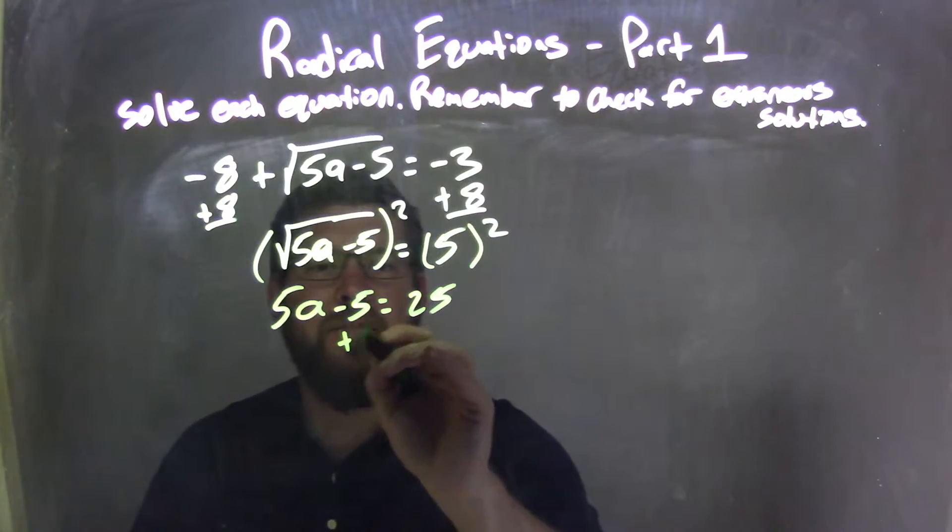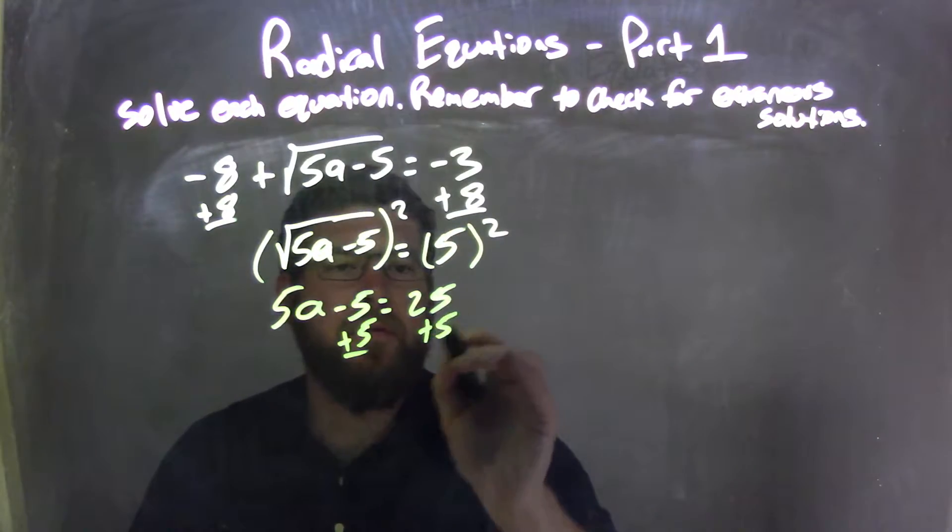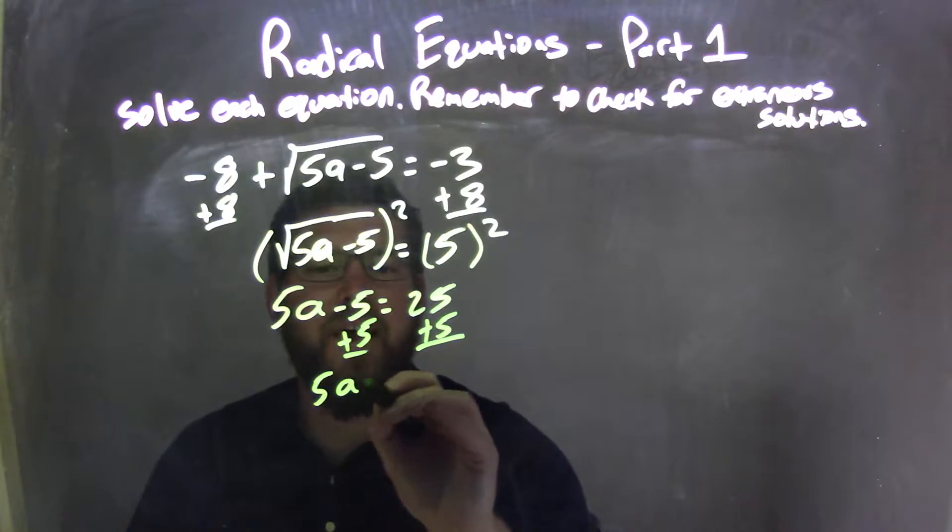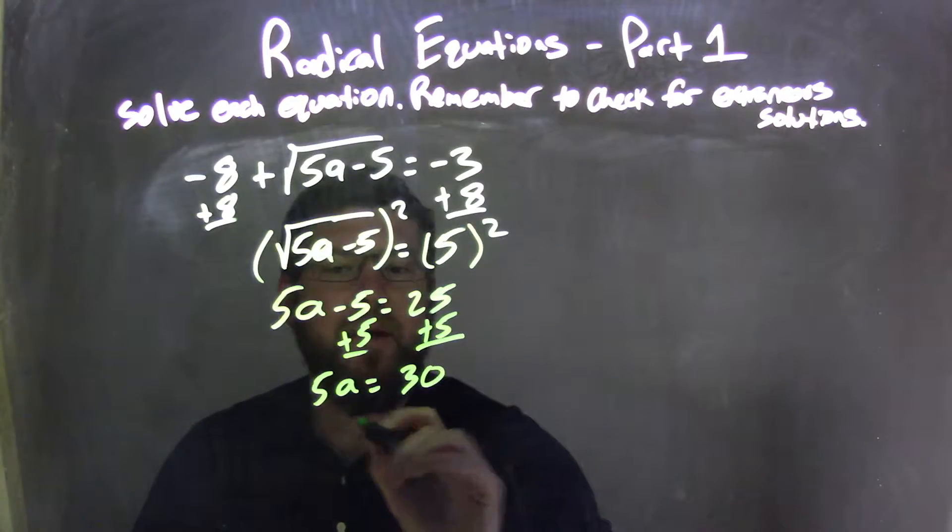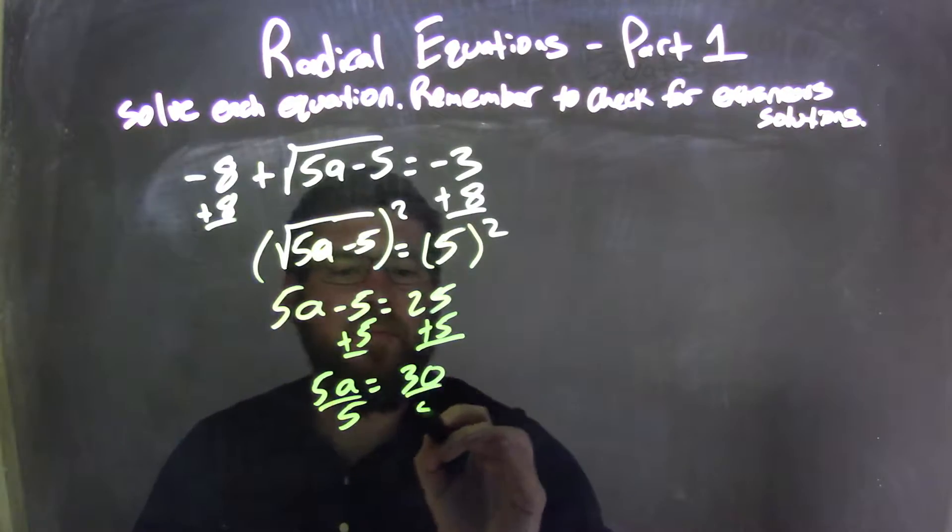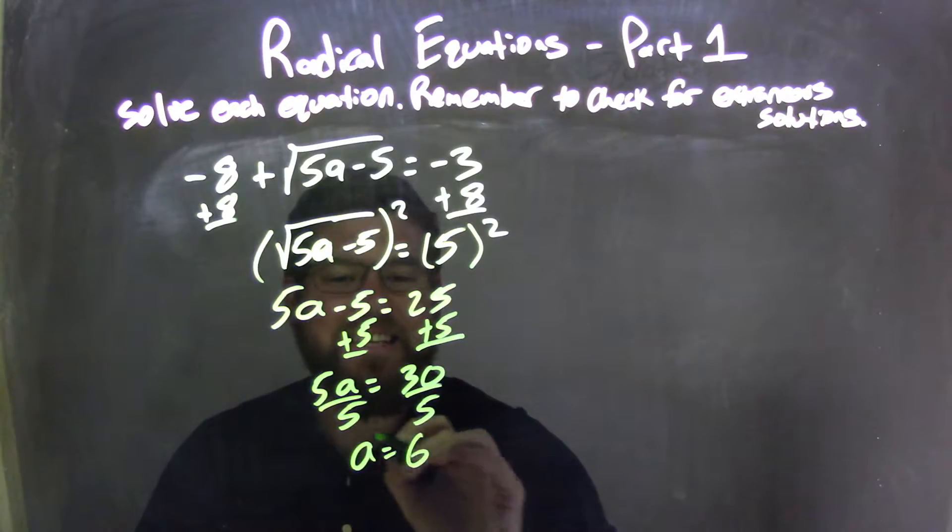I then add 5 to both sides, leaving me with 5a equals 30. I then divide by 5 to get a by itself, and a equals 6.